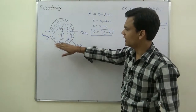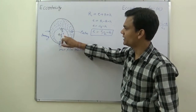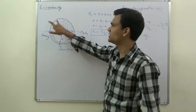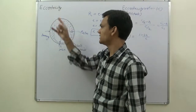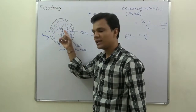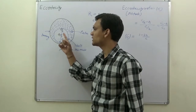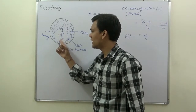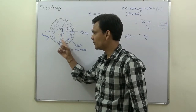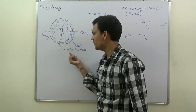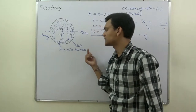I write the various terms: E is eccentricity, O is the center of bearing, O1 is the center of shaft, R is the radius of the shaft, and H is minimum film thickness.